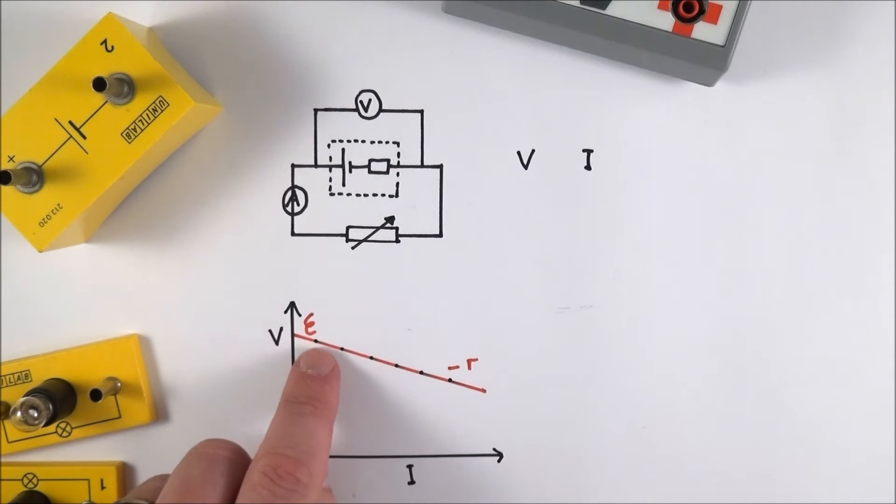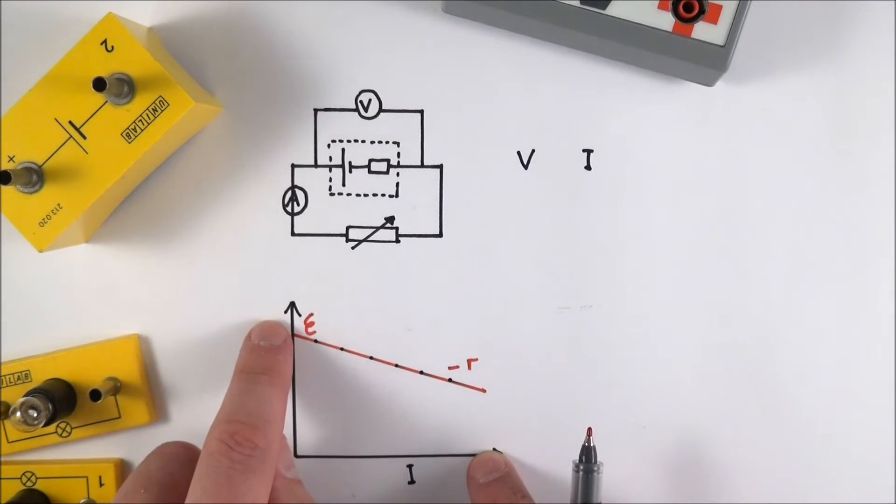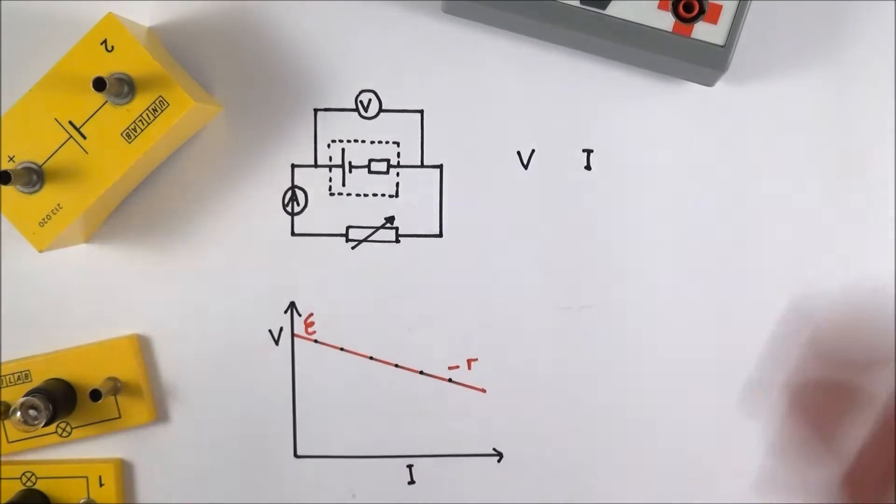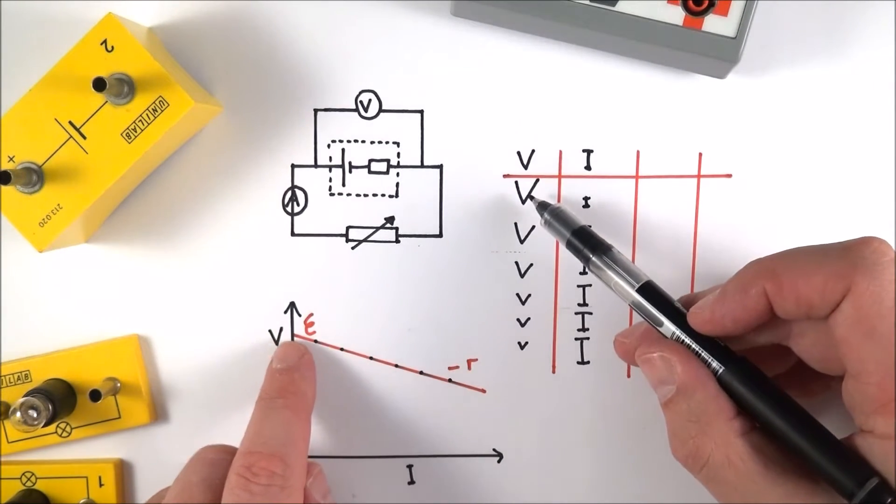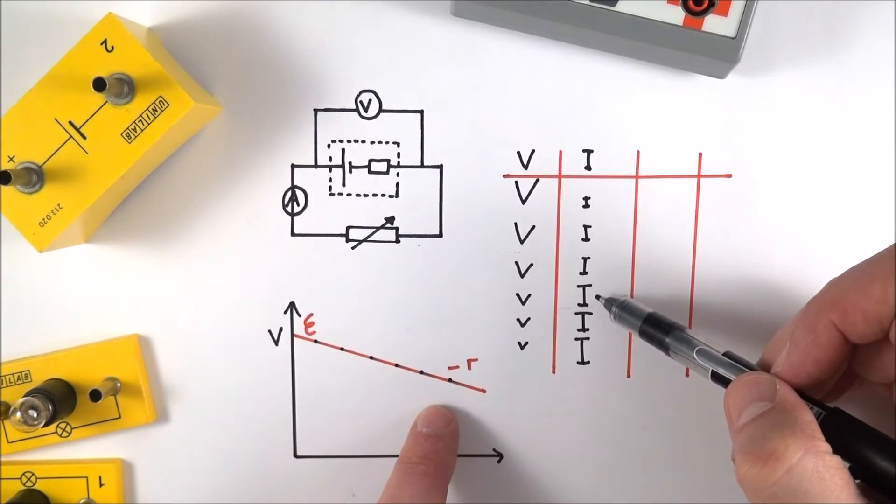As I gets bigger and bigger, V gets smaller and smaller. Here I've just shown that basically as V is getting smaller, I is getting bigger.